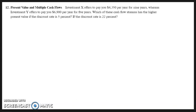So Investment X offers to pay you $4,350 a year for nine years, whereas Investment Y offers to pay you $6,900 per year for five years. Which of these investment streams has the higher present value if the discount rate is 5% and 22%?